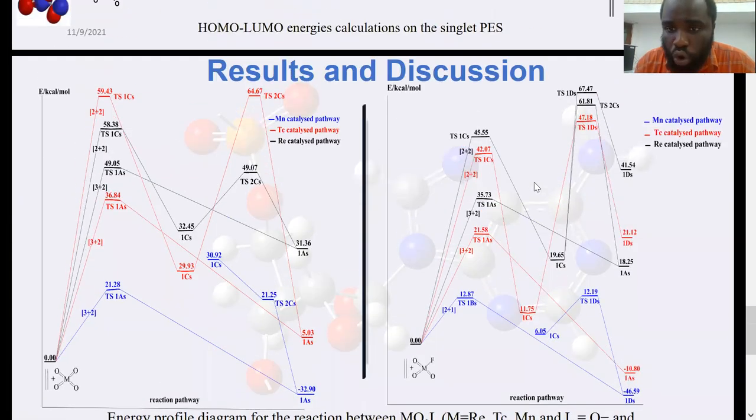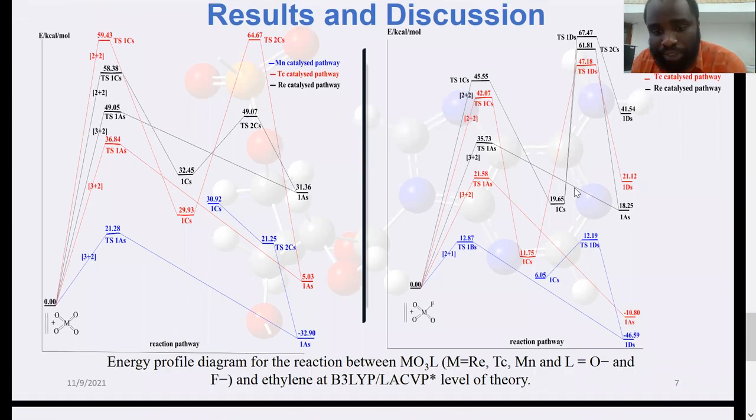This was different in the fluorine-substituted cases. For MnO3F, it could be clearly seen that there was no way we could form diols, but the 2+1 pathway was quite feasible, indicating that MnO3F would epoxidize olefins exclusively, whereas TcO3F and ReO3F would give racemic mixtures of epoxides and diols. However, energetics do not favor their formation, and at high temperatures, they are likely to decompose.